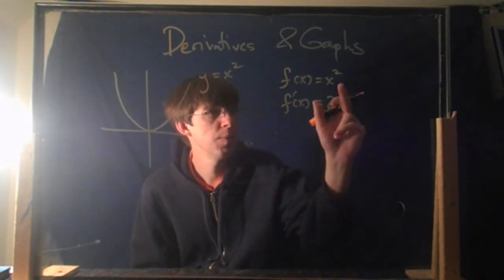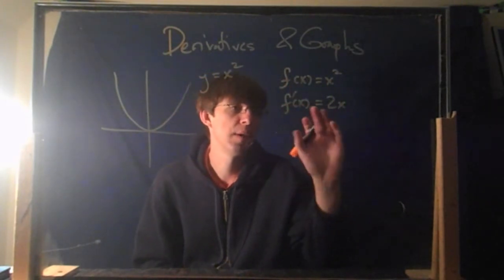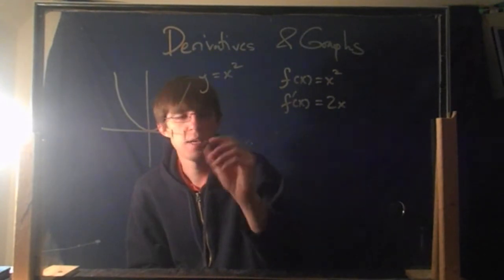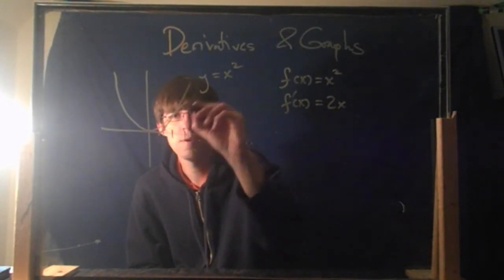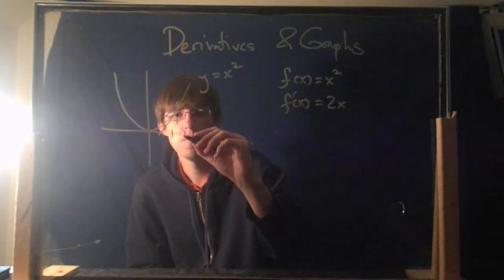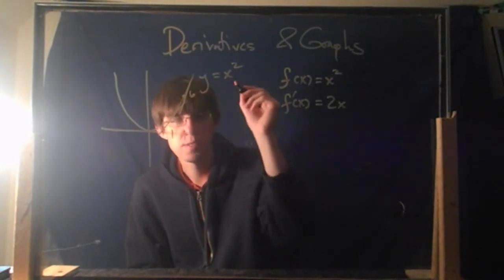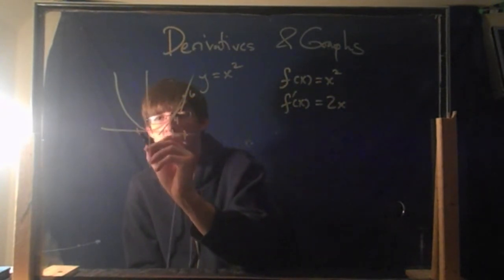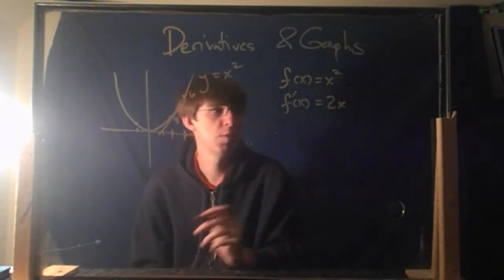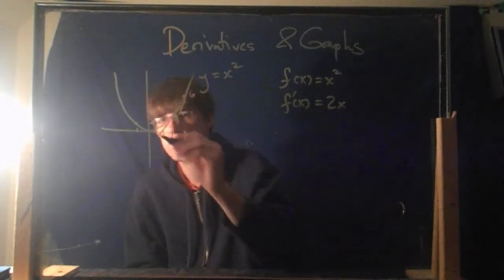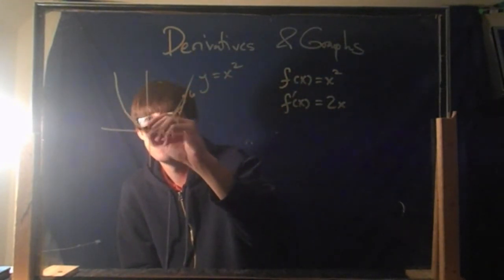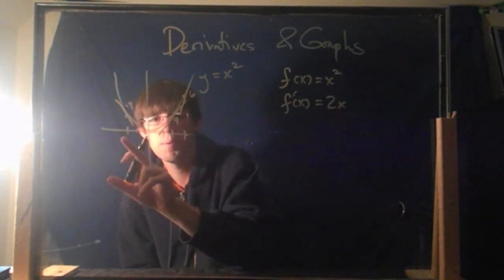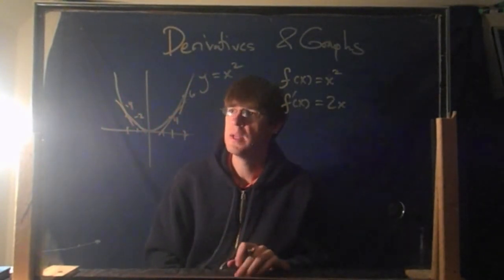What that means is the slope: whenever you plug in a certain point x, the slope at that point is equal to 2x. So for instance, if you plug in x equals 2, the slope right here will be 4. x equals 3, the slope right here will be 6. These are the slopes that I'm drawing. What about back here? x equals negative 1 — the slope will be 2 times negative 1, which is negative 2. Back at negative 2, the slope will be negative 4. Each time you multiply x by 2, you get the slope at that point.